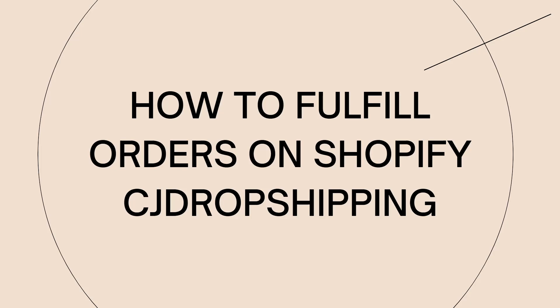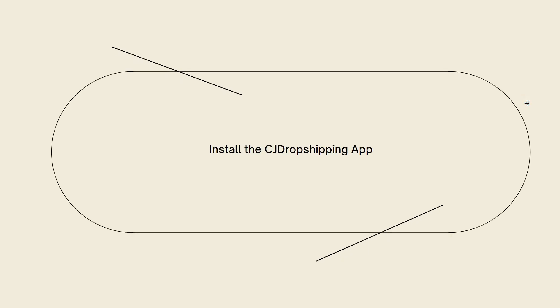First of all, what you need to do is to install the CJ dropshipping app. So in your Shopify admin, navigate to the Shopify app store and search for the CJ dropshipping app. Now install and activate the app on your Shopify store.